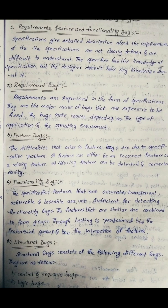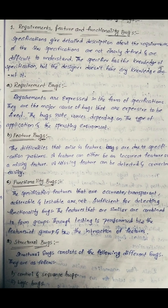If you have a specification problem, a feature can either be incorrect or missing. When a designer designs incorrectly, that is called a feature bug. A missing feature can be detected and corrected easily. The third type is functionality bugs. The specification features should be accurate, transparent, achievable, and testable.